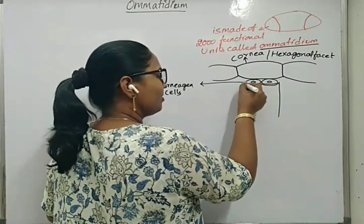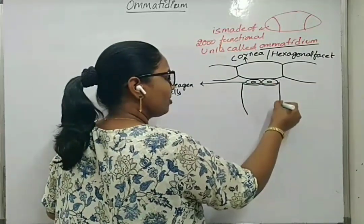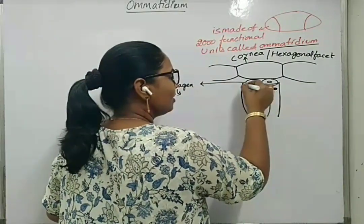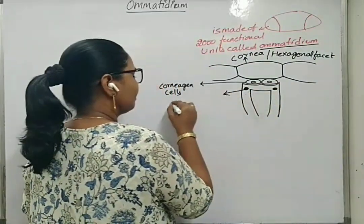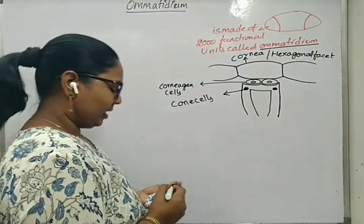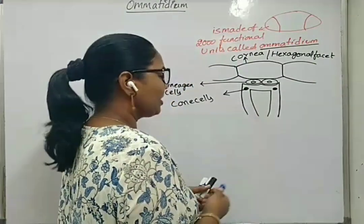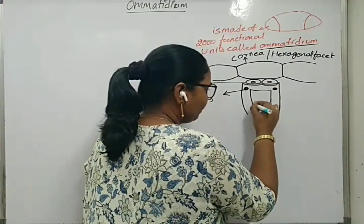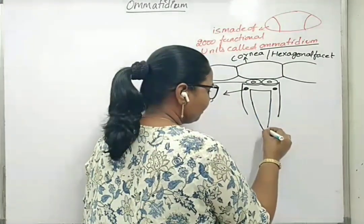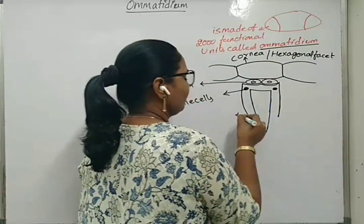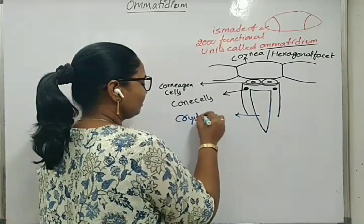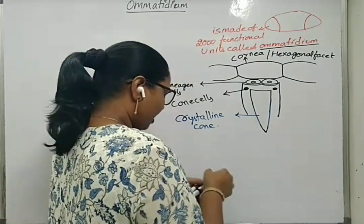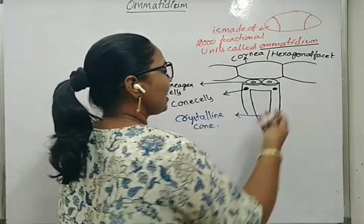Corneal agent cells are surrounded by special structures called cone cells. These cone cells secrete a crystalline structure called the crystalline cone. The crystalline cone is longer than the cone cells. These cone cells are surrounded by special structures called the iris pigment sheath.